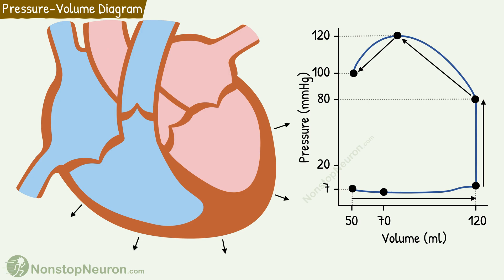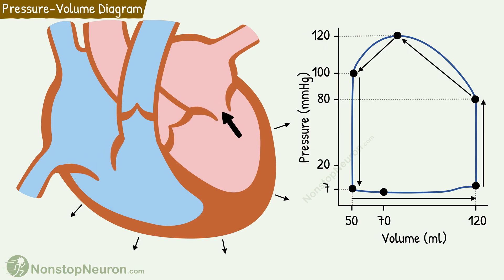Now isovolumetric relaxation starts, giving us the last segment of the diagram. During this, there is no flow of blood, so the volume shows no change — there is no movement on the x-axis. Due to relaxation of the ventricle as a closed chamber, there is a sharp fall in pressure to about 7 mmHg, as we saw at the beginning. Thus, the entire loop is completed, and now the mitral valve opens and the loop is repeated.